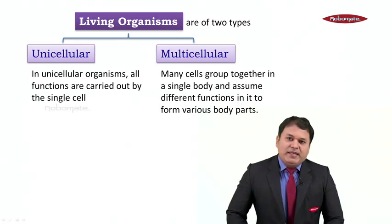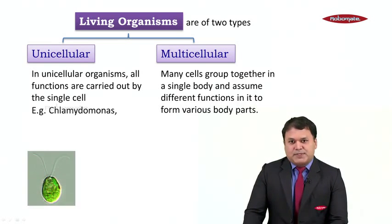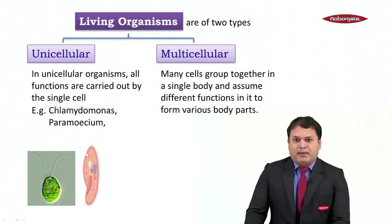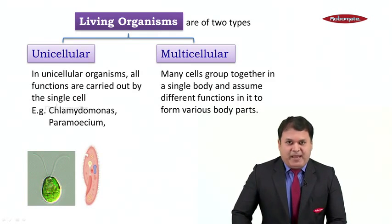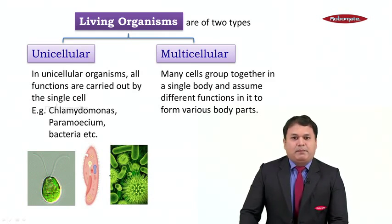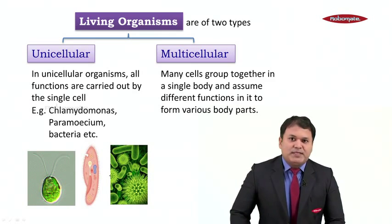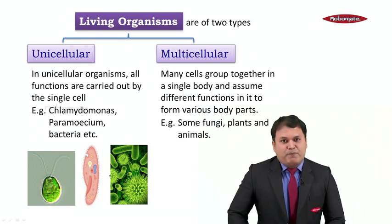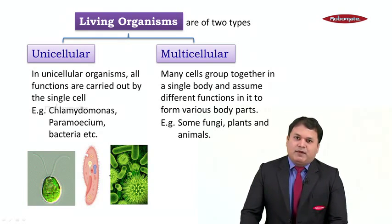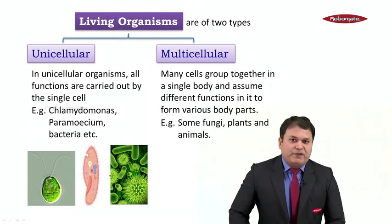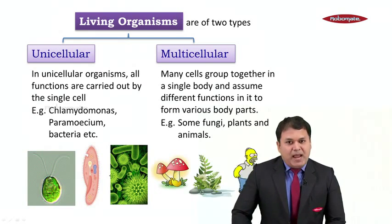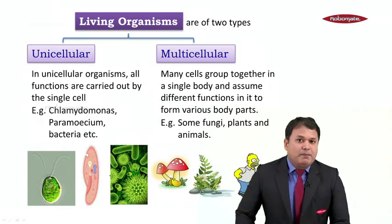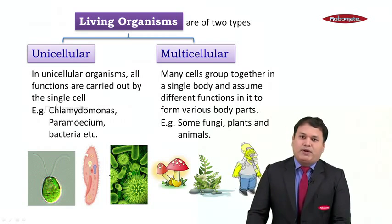In the case of unicellular organisms, we have examples like Chlamydomonas, Paramecium, and bacteria. Whereas in the case of multicellular organisms, we have some fungi, plants, and animals, including human beings.